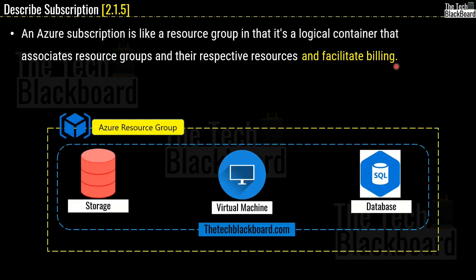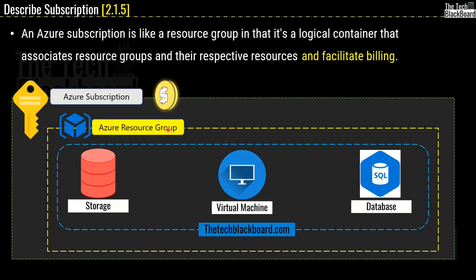Remember our previous example in episode 9 where we created a website called techblackboard.com. We need a lot of resources to create a website — storage, virtual machines, database, and possibly more. Now, think about on what level Microsoft tracks all these resources for billing. Is it on the resource level? No. Is it on the resource group level? No. The correct answer is on the subscription level — Microsoft tracks all the billing at the subscription level. This is one big important aspect of Azure subscription.